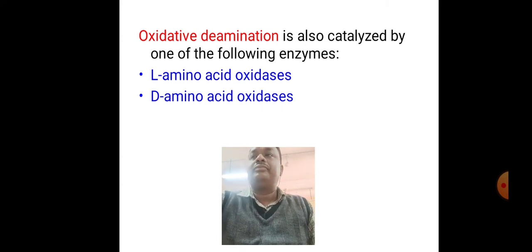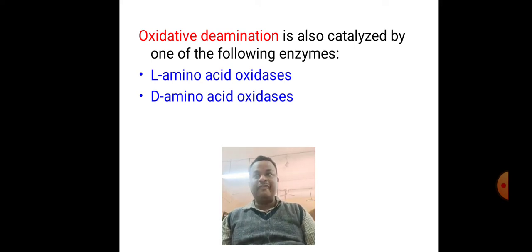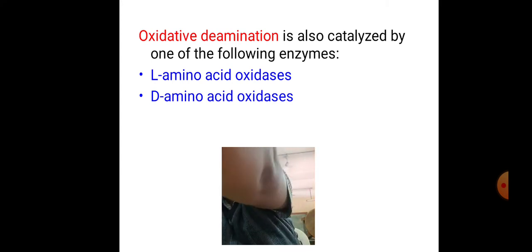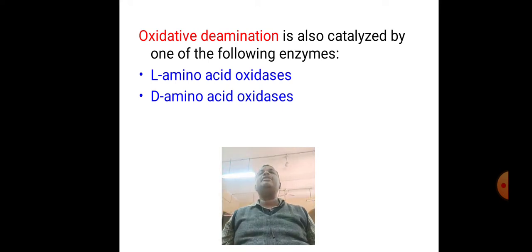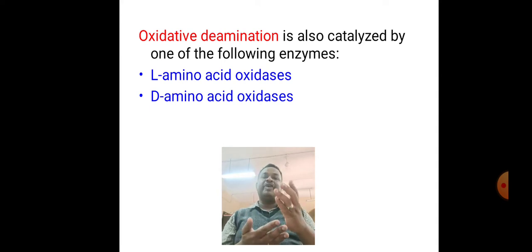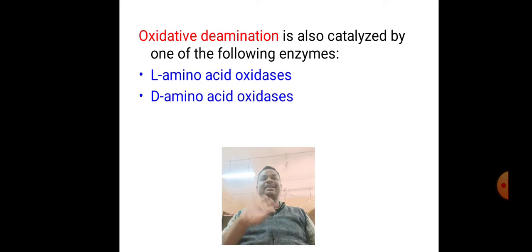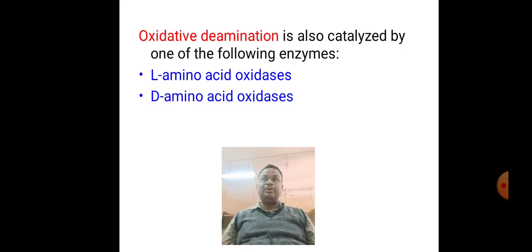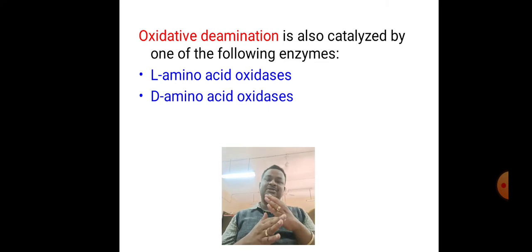Oxidases are a general group of enzymes involved in oxidative deamination. There are two types of oxidase enzymes based on the type of amino acids oxidized: L-amino acid oxidases and D-amino acid oxidases. These correspond to levorotatory (left-oriented) and dextrorotatory (right-oriented) amino acids respectively.